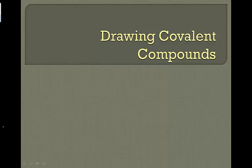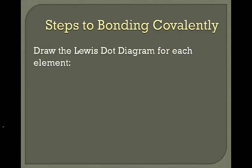Video lecture 3: Drawing Covalent Compounds. If we want to bond covalently, one of the first things we're going to have to do is draw the Lewis dot diagram for each of the valence electrons. Remember, the Lewis dot diagram deals with the valence electrons of each of our atoms.